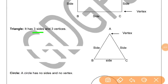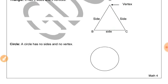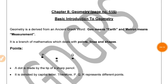Triangle: It has three sides and three vertices. That means it has three sides and the point where two lines meet is called a vertex. So it has three vertices. Circle: A circle has no sides and no vertex. It has a center in the middle. It is made with the help of curved lines. So this was the basic introduction to geometry. Thank you.